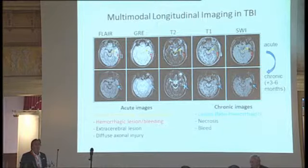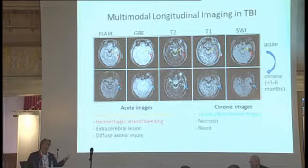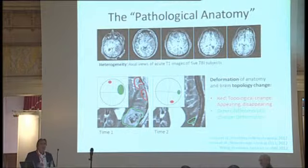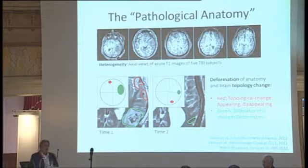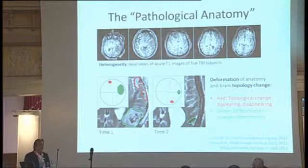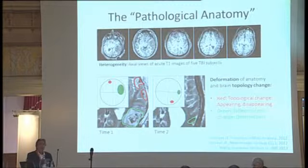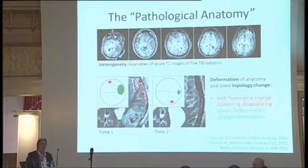There is really no software package that can do this in a highly automated way. First, we have a huge heterogeneity in TBI. Do lesions show up in the same regions, or are certain regions vulnerable? This is a big problem for image processing. Secondly, we have large-scale deformations and large-scale changes over time due to rehabilitation. And for those involved in registration, topology changes — appearing and disappearing lesions — are a big problem, because we usually assume a diffeomorphic one-to-one registration.